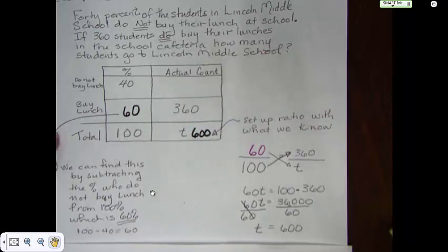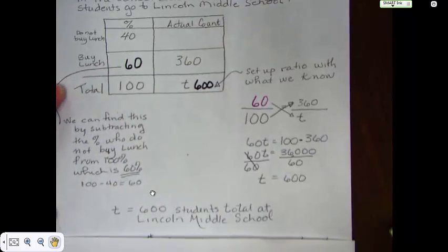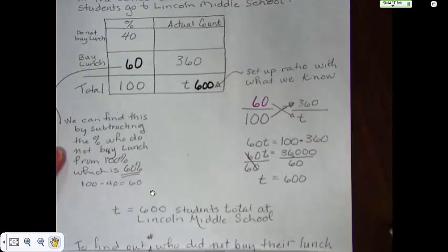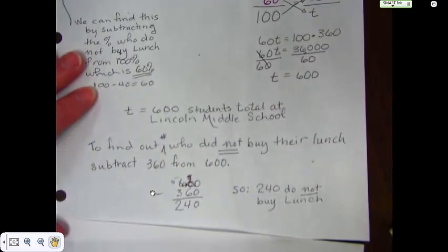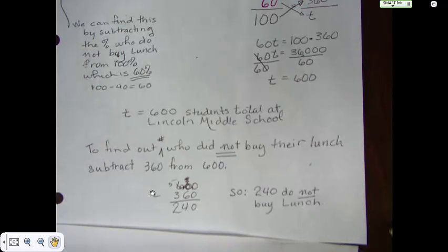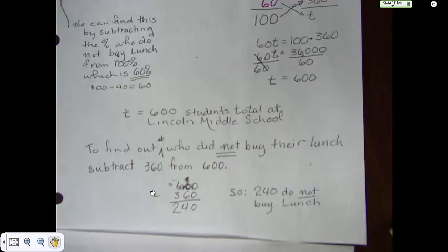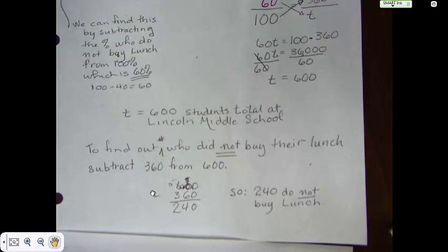Well, we now know the actual count because all we really need to do is take 600 minus 360. And we end up with 240. And 240 do not buy lunch. Now, if you wanted to, you could go through the process of writing it out as 40 over 100 equals x over 600. And you could solve and you would still get 240.